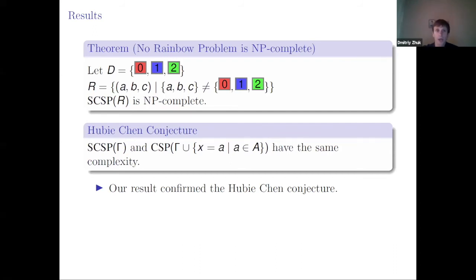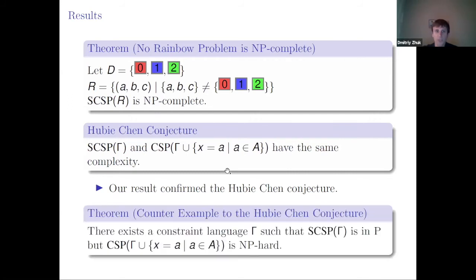My result confirmed the Hubert Chen conjecture in this case. After proving the no rainbow problem is NP-hard, I spent a couple of months trying to prove the conjecture for the three-element domain. I checked many cases and confirmed the conjecture in each — until the moment I found the counterexample. I found a constraint language gamma such that surjective CSP over gamma can be solved in polynomial time, but CSP over gamma with constants is NP-hard. Unfortunately, the conjecture does not hold.